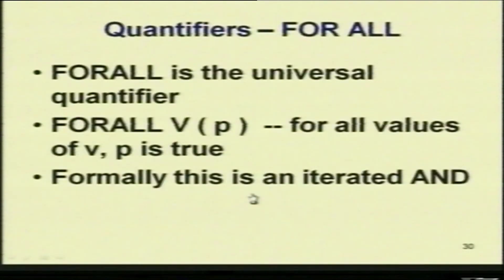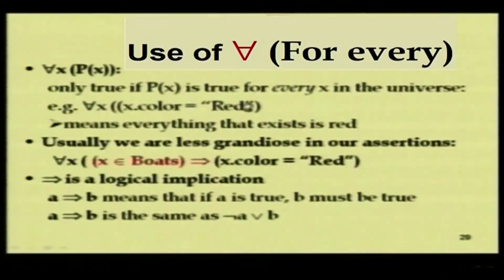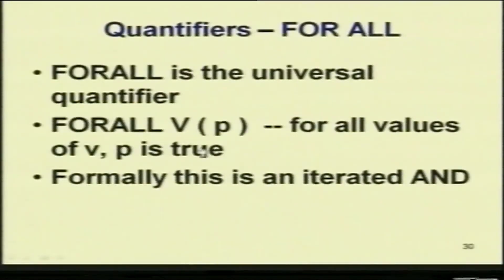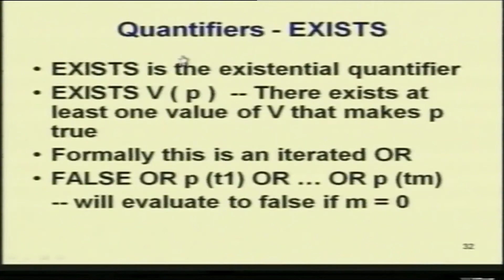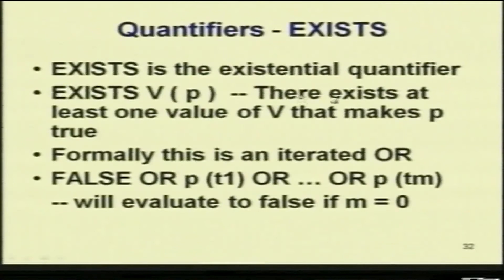There are two quantifiers: the universal quantifier 'for all' and the existential quantifier 'there exists.' The universal quantifier says that for all values of v, p is true — it is like an iterated AND and evaluates to true only if all instances are true. The existential quantifier says there is at least one value of v for which predicate p is true — it is like an iterated OR and evaluates to false if there are zero matching values.